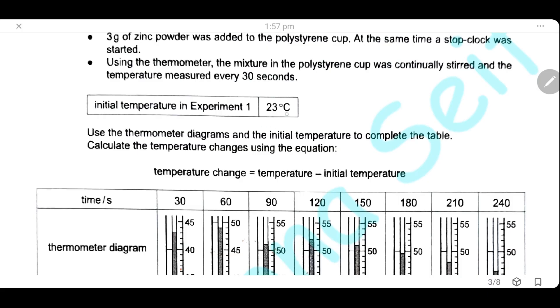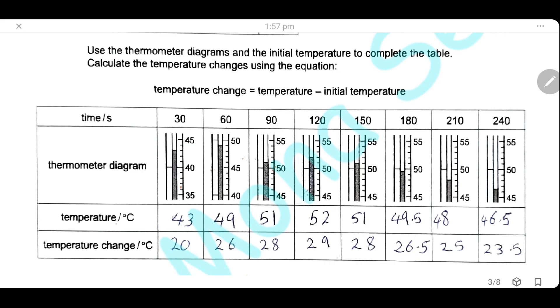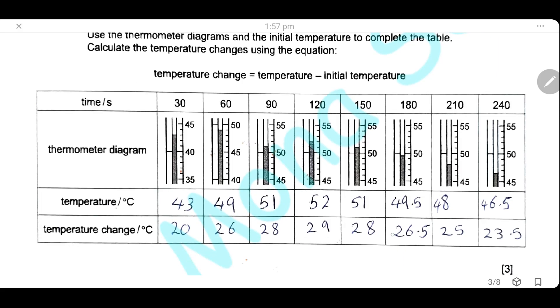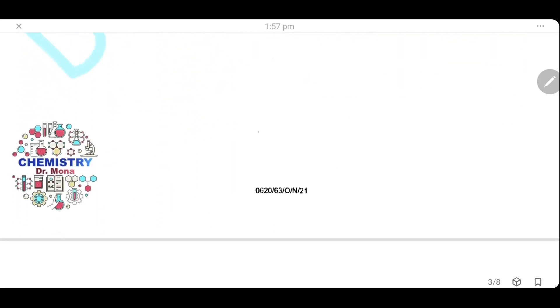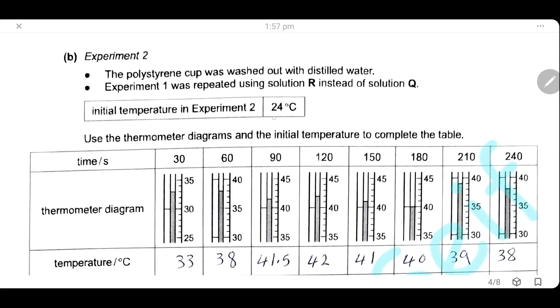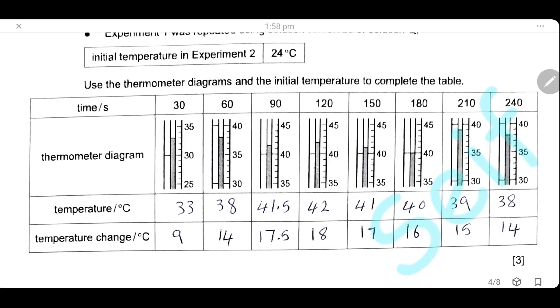Using the thermometer, the mixture in the polystyrene cup is continuously stirred and the temperature is measured every 30 seconds. The initial temperature is 23°C. Here, we will record the temperature every 30 seconds. The thermometer diagram shows the temperature. We calculate the temperature change by subtracting the reading minus the initial temperature. Every time, we subtract our reading from the initial temperature to calculate the temperature change. Then, the experiment is repeated for solution R instead of solution Q. Here, the initial temperature is 24°C.